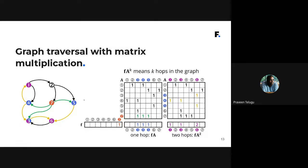Here's an example of graph traversal. We have a graph on the left represented by adjacency matrix A. Let's say our frontier is vertex 7, represented as a row matrix with a 1 at position 7. If you perform matrix multiplication — multiply this frontier row vector by the adjacency matrix — you get another row matrix representing all nodes reachable from 7: vertices 3, 4, and 5. Multiplying again gives you the next frontier.